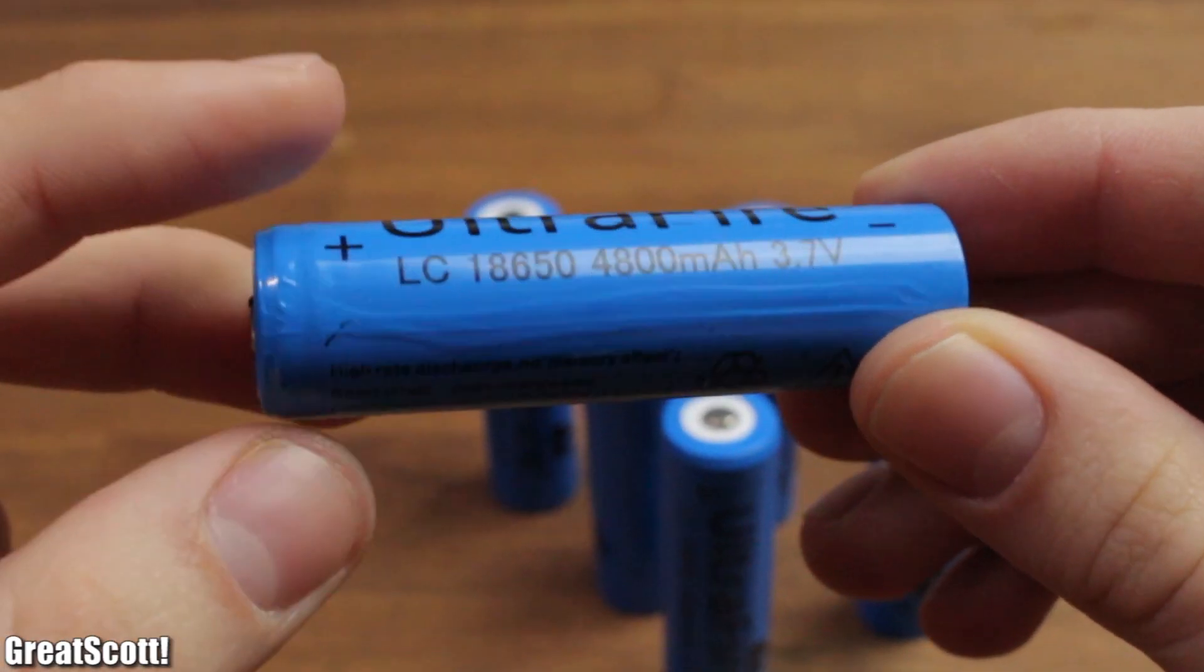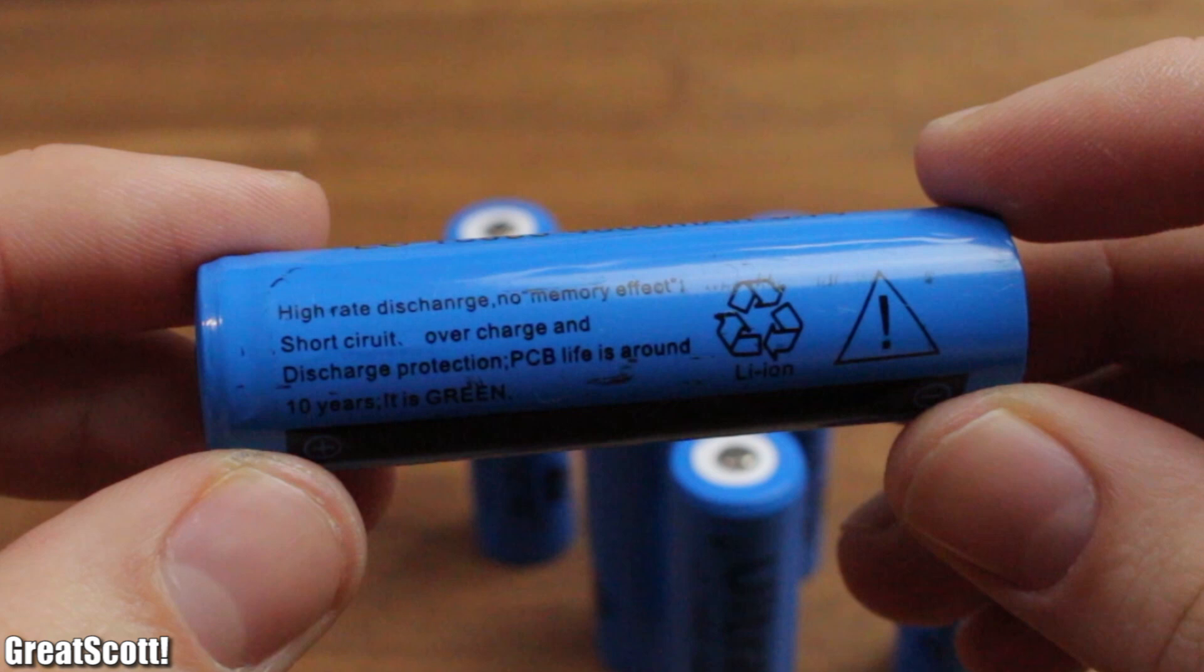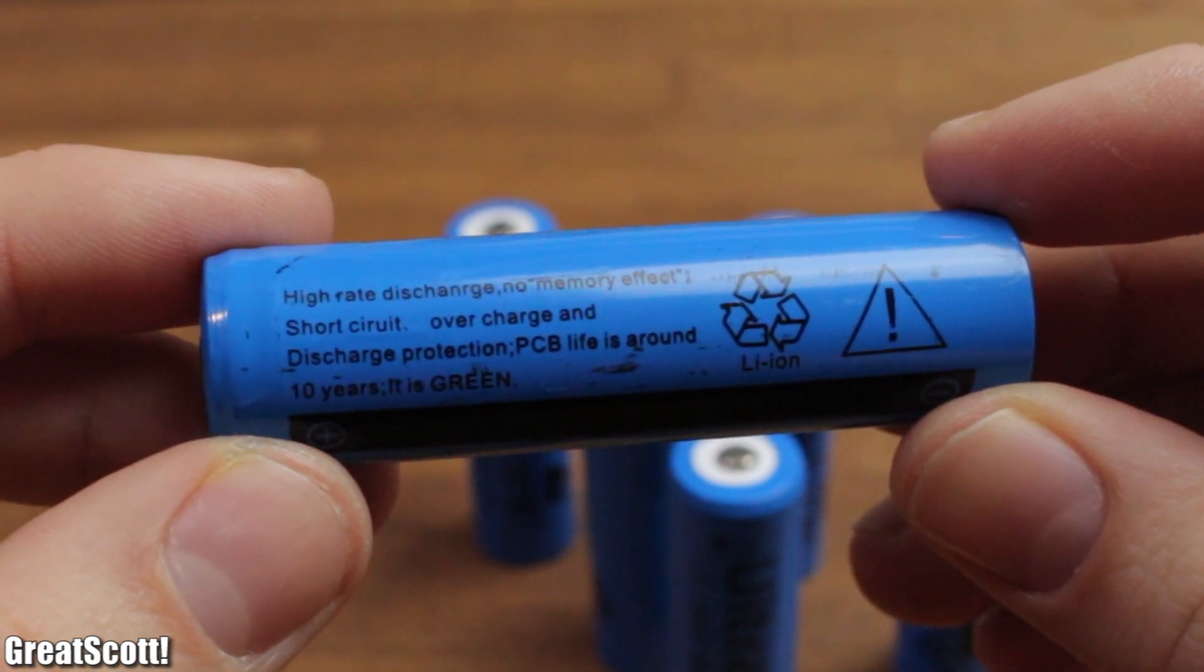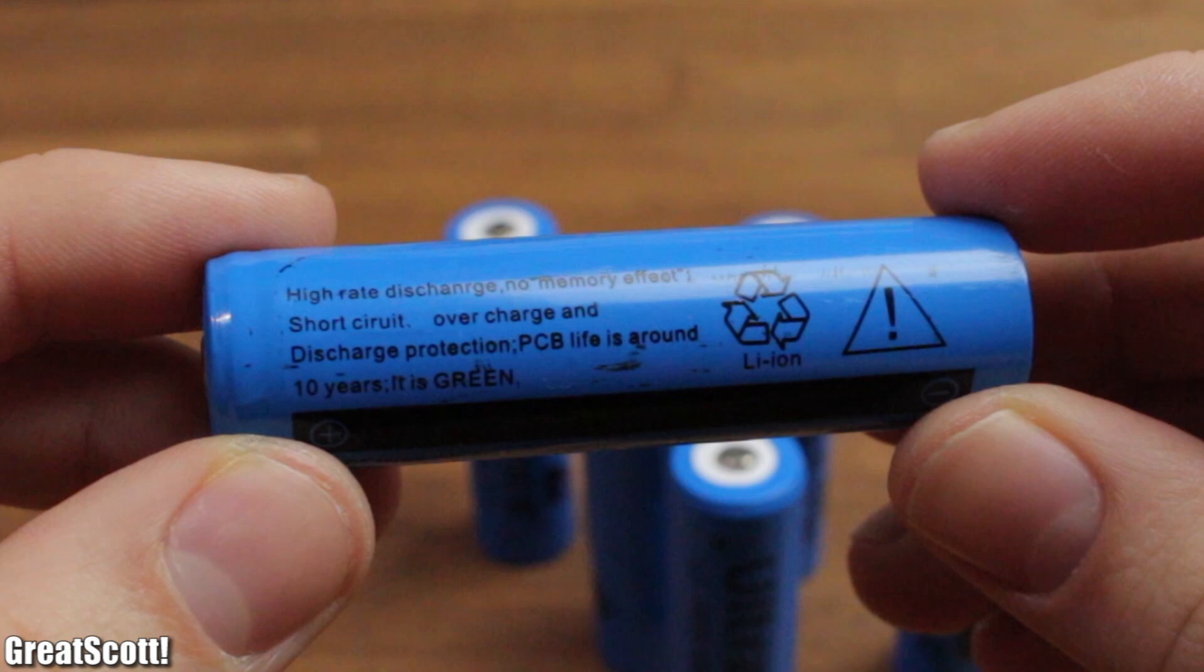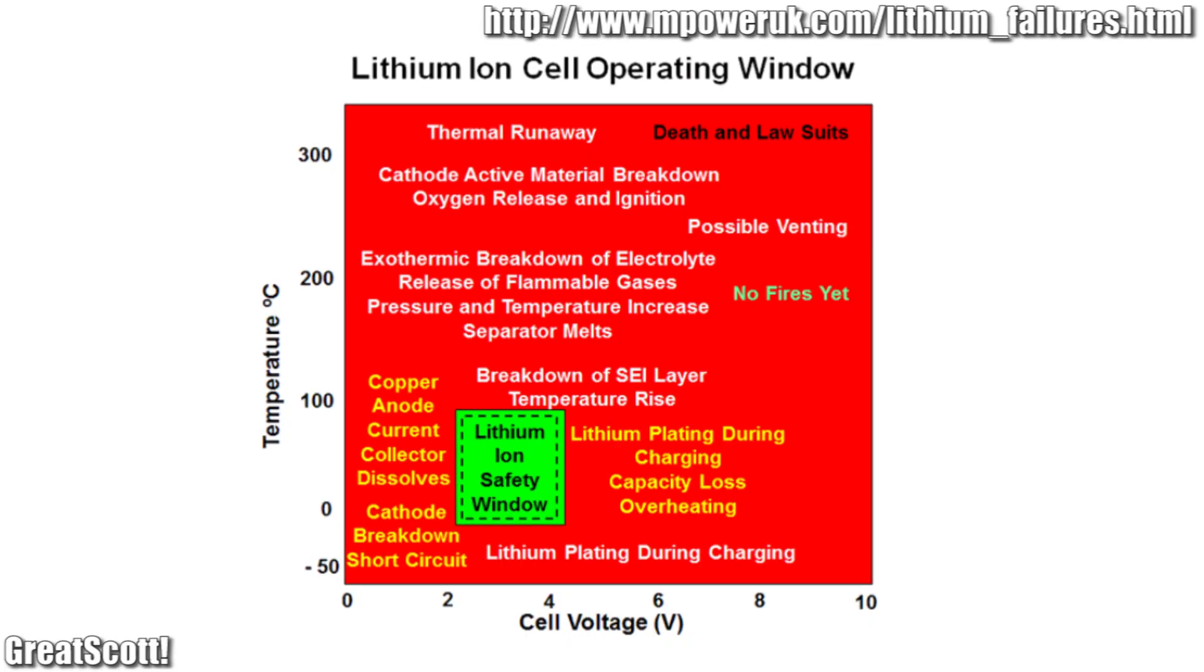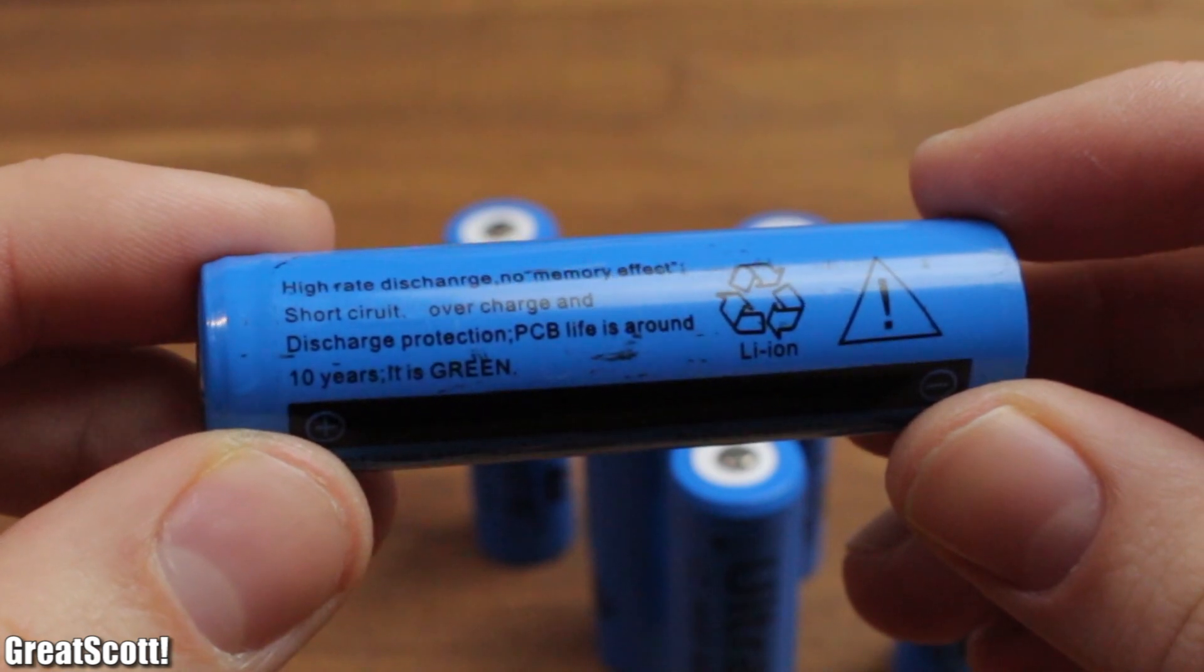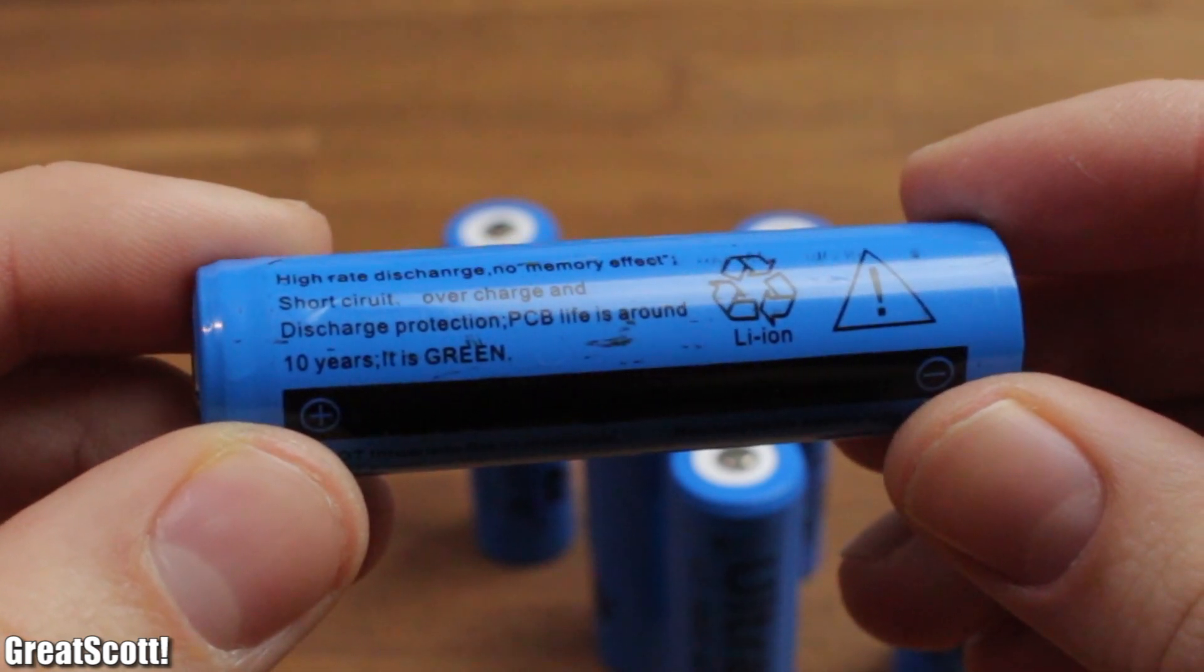First of all let's inspect the protective packaging of those batteries. And as you can see it tells us that it has a protective circuit inside, which prevents it from over discharge when its voltage falls under 2.5 volts, overcharge and short circuits. Now that would spoil the fun.